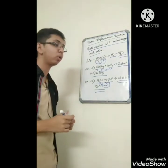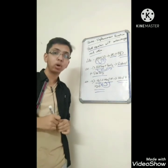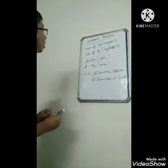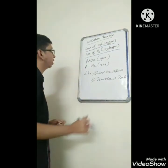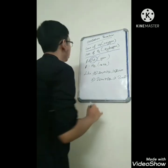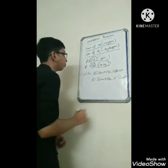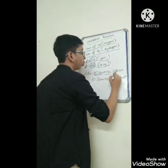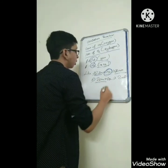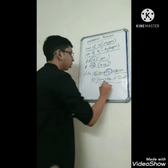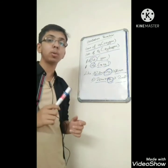Our next topic is oxidation reaction. Gaining of oxygen or losing of hydrogen is known as oxidation reaction. Example 1: 2Zn + O₂ gives ZnO — in this equation oxygen is gained, so this is an oxidation reaction. Example 2: 2Cu + O₂ gives 2CuO — oxygen is gained here too, so this is also an oxidation reaction.